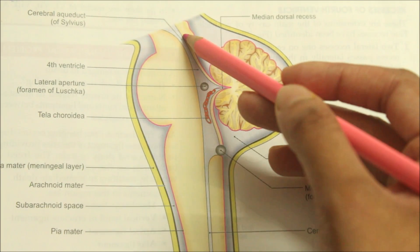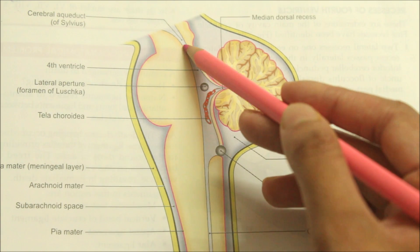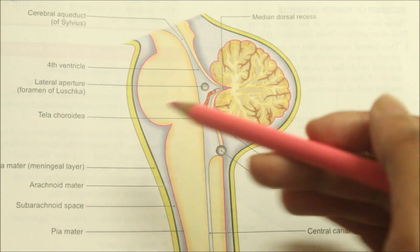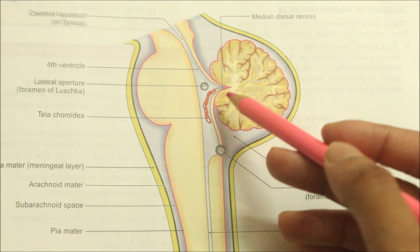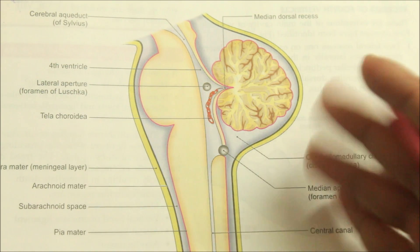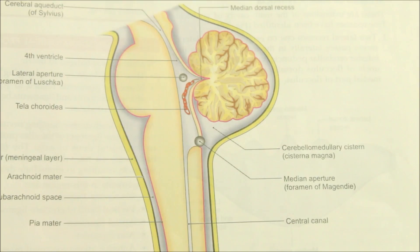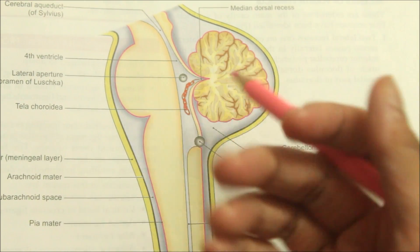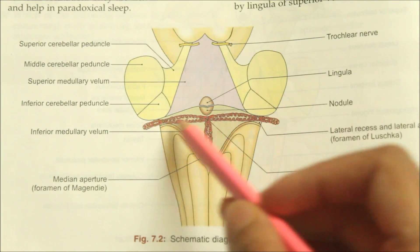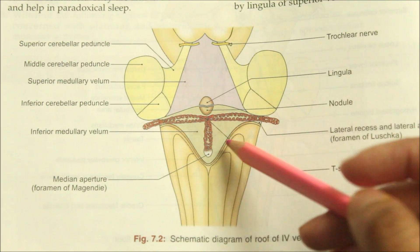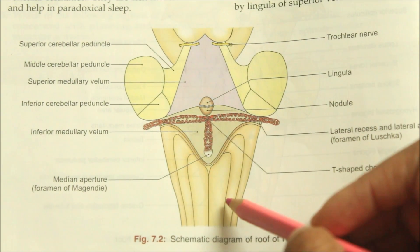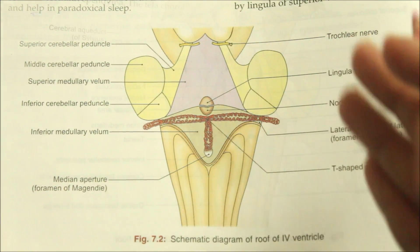The fourth ventricle has a superior angle, an inferior angle, and lateral angles. The superior angle is continuous with the cerebral aqueduct. The inferior angle is continuous with the central canal of the spinal cord. The lateral angles, one on each side, are continuous with the inferior cerebellar peduncles. The recesses are extensions of the main cavity — the fourth ventricle has five recesses: two lateral recesses, one median dorsal recess, and two lateral dorsal recesses that extend dorsally lateral to the nodule.